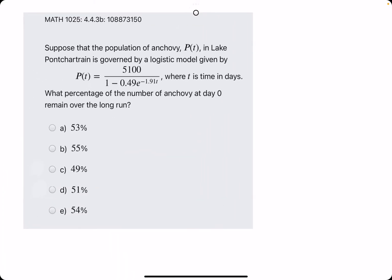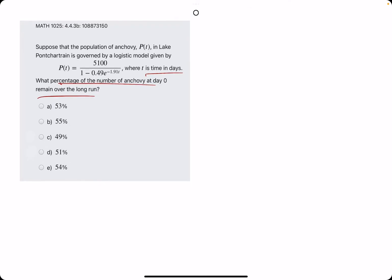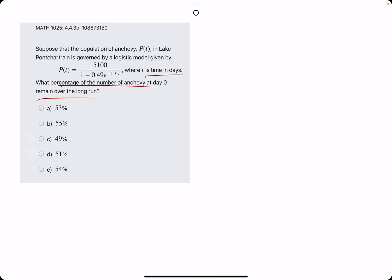So, they say t is time in days. What is the percentage of the number of anchovy at day zero that remain over the long run? What this means is we want to first find the population at day zero, and then find the population over the long run. What does that mean?